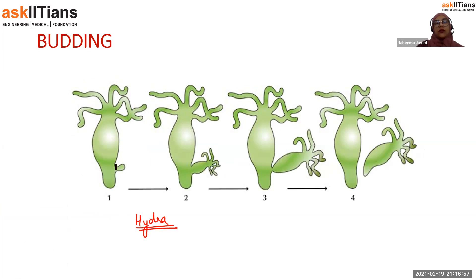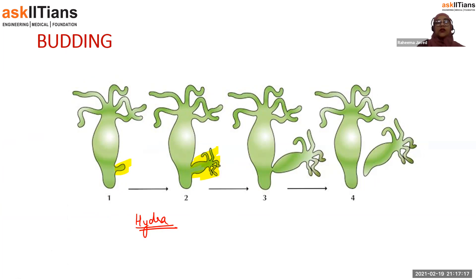In the hydra also, you can see a tiny little outgrowth in the form of a bud. This bud grows just like the parent, and finally it gets cut off and develops into a completely new individual. Whenever you are asked what a bud is, you can simply answer that it is just an outgrowth on the parent's body.